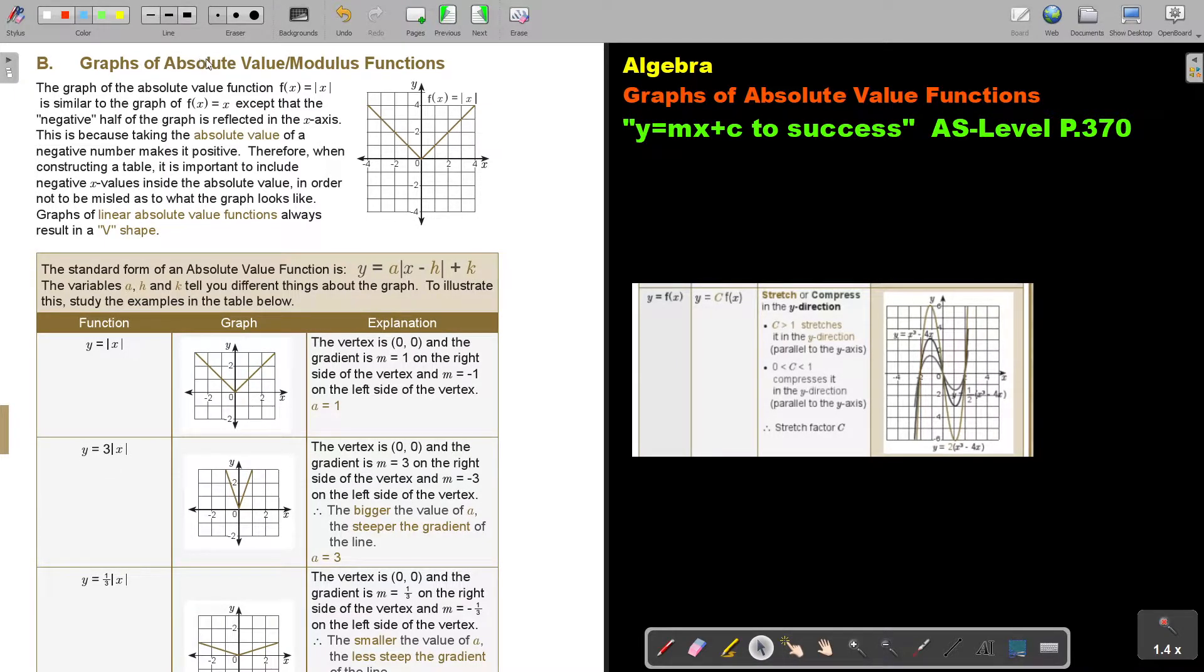Graphs of absolute value or modulus functions. The graph of the absolute value function f(x) equals |x| is similar to the graph of y equals x, except that the negative half of the graph is reflected in the x-axis. This is because taking absolute value of a negative number makes it positive.